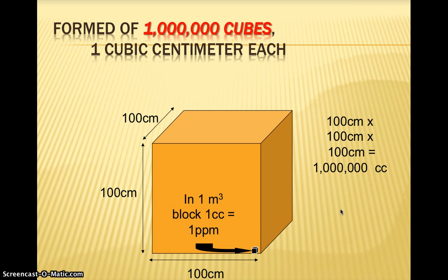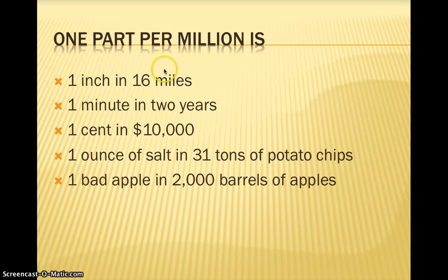One block — one part per million. Take a look at what one part per million means. An example would be one inch in 16 miles — that one inch represents one millionth part of the whole 16 miles. Or one minute in two years, or one cent in $10,000, or one ounce of salt in 31 tons of potato chips, or one bad apple in 2,000 barrels of apples. These comparisons help you understand what one part per million is.